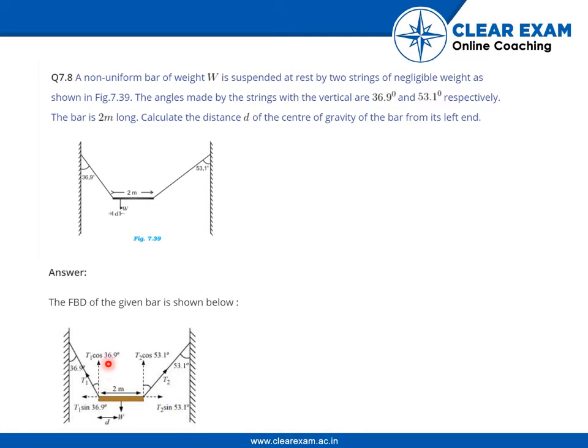Likewise, this is T1 cos 36.9 degrees as this angle is 36.9 degrees which gives the value of this angle as well. And, this is T1 sin 36.9 degrees and the direction as shown by the arrow marks.